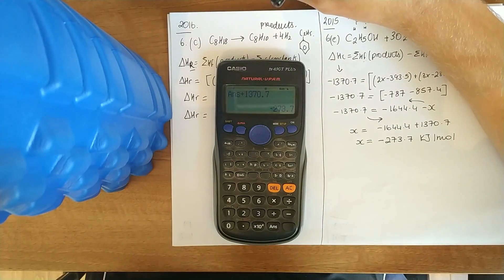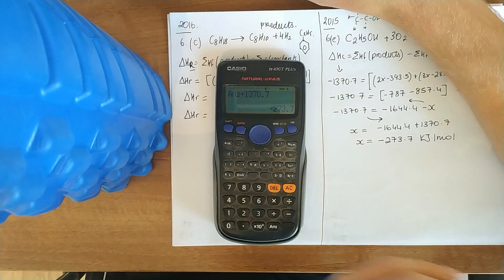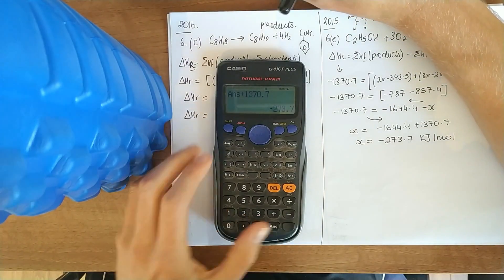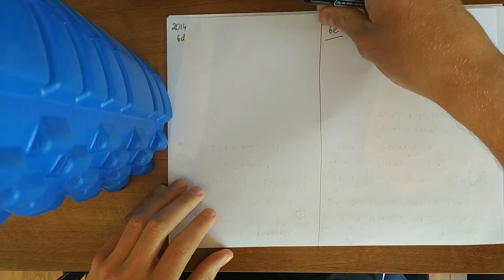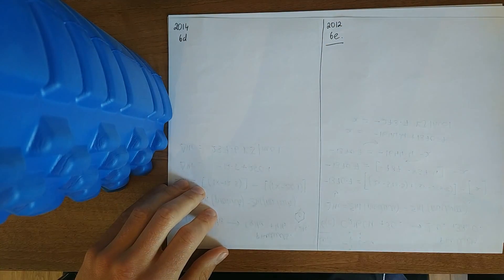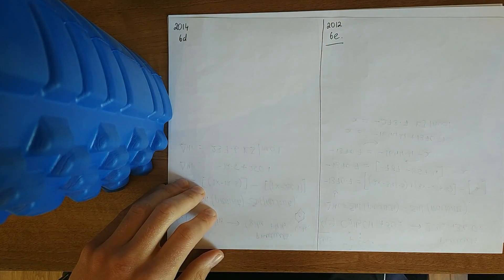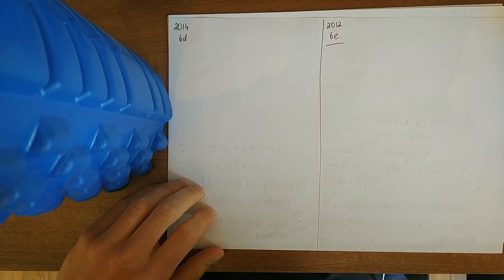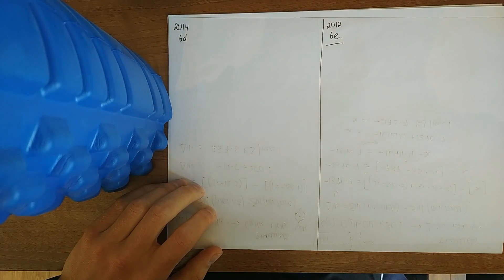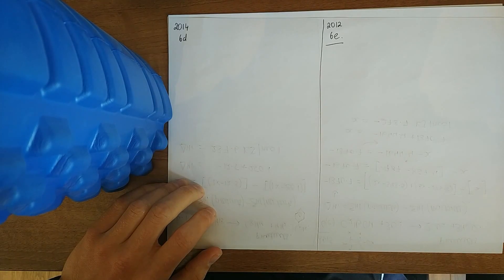Another one: 2014, 6D. They've asked you to define heat of combustion — it's the heat change in kilojoules when one mole of a substance is completely burned in excess oxygen. Write the balanced equation for the complete combustion of butane. Butane — meth, eth, prop, but — is C4H10. Complete combustion, and it's a heat of combustion, so it's carried out in excess oxygen giving carbon dioxide and water.